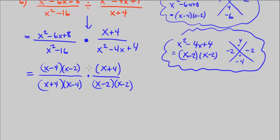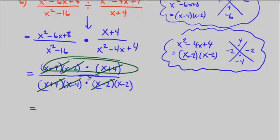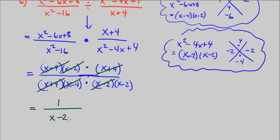Now that we're multiplying across, we can combine into one fraction and cancel any common factors in the numerator and denominator. We have x plus 4 and x plus 4 cancel, x minus 4 and x minus 4 cancel, x minus 2 and x minus 2 cancel. In the numerator all terms are canceled, leaving 1. In the denominator everything cancels except x minus 2. So this is our simplified expression for Part B: 1 over x minus 2.